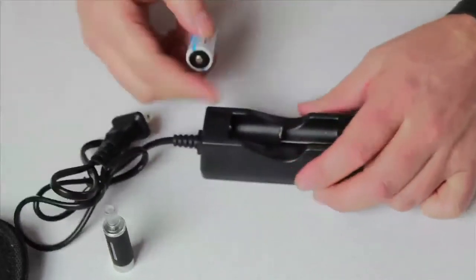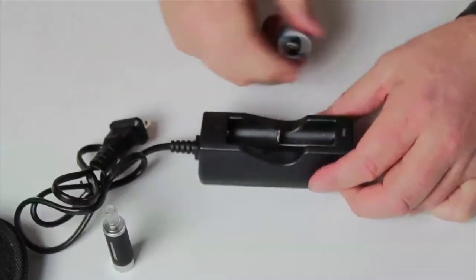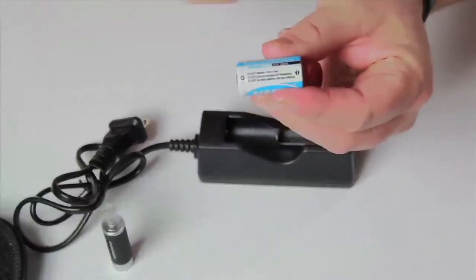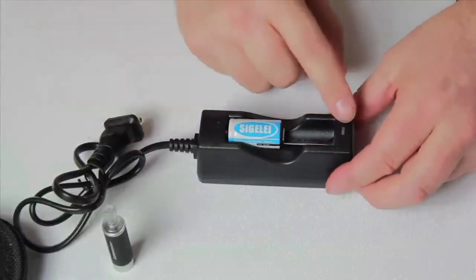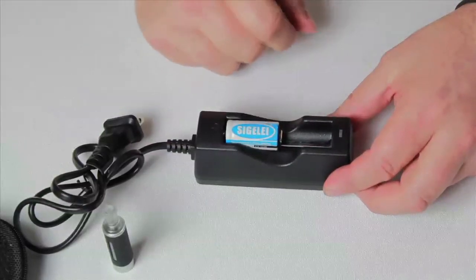With the charger, when you take your battery, you have this slide here. All you're going to do, you've got a positive, negative, and the battery states positive and negative on it. This you just pop in. When it's plugged in, this light's going to turn red. As soon as the light turns green, that means the battery is fully charged.